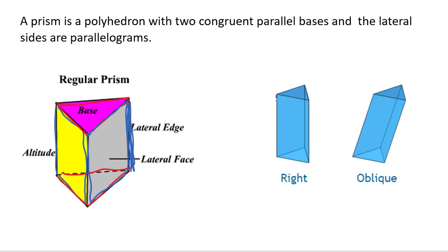For a right prism, your altitude is the same length as your lateral edge. But here in an oblique, your altitude is kind of outside and is perpendicular, maybe a little bit outside. We'll talk about what that means.